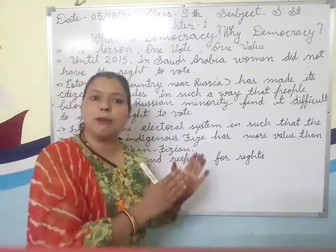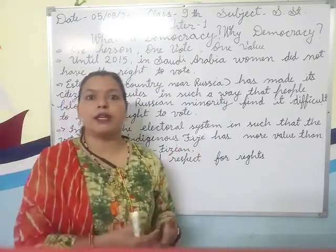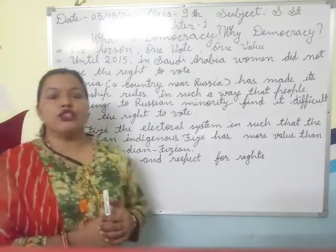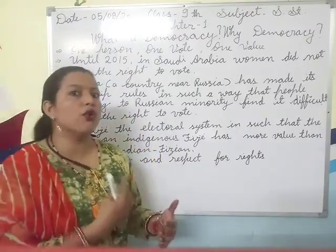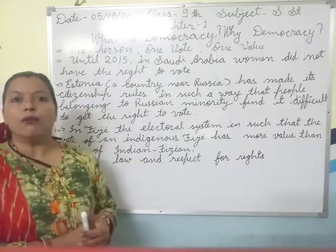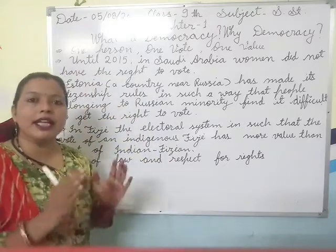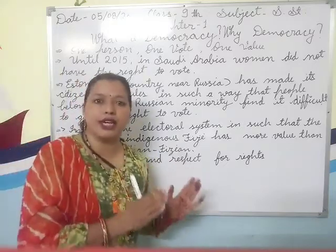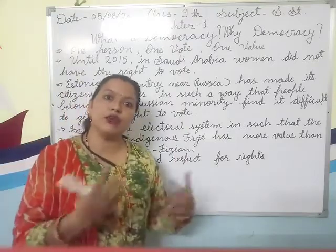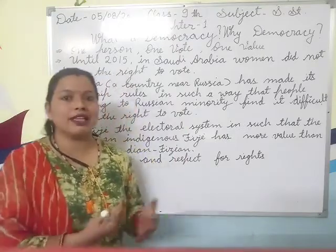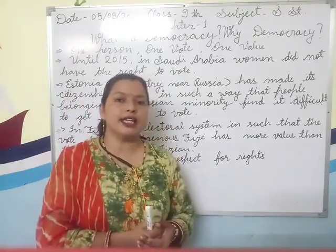Now what do you understand through this example? What does the government mean? Was it democratic? The rules were followed by their own actions, but women were not given the right to vote. So in this case, can we say it was a democratic government? The rules were the same, but when we look at how those rules were applied, we cannot fully call it a democratic government.